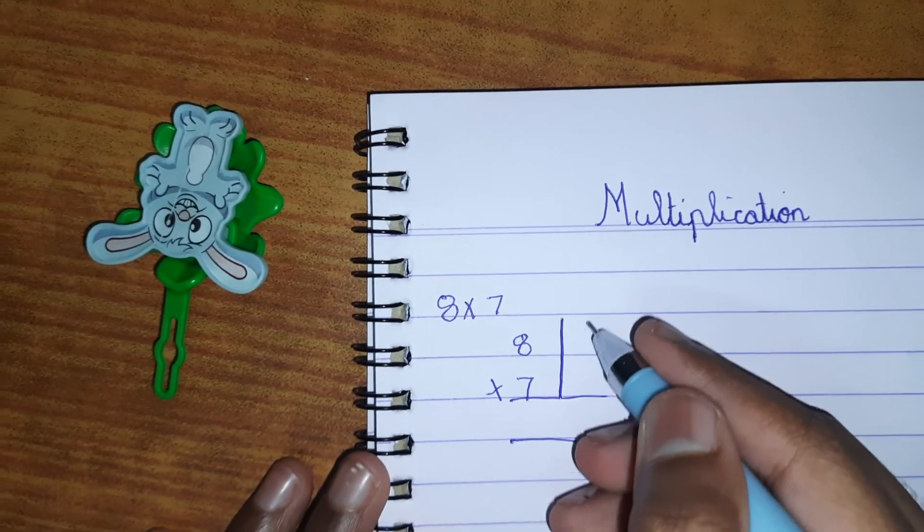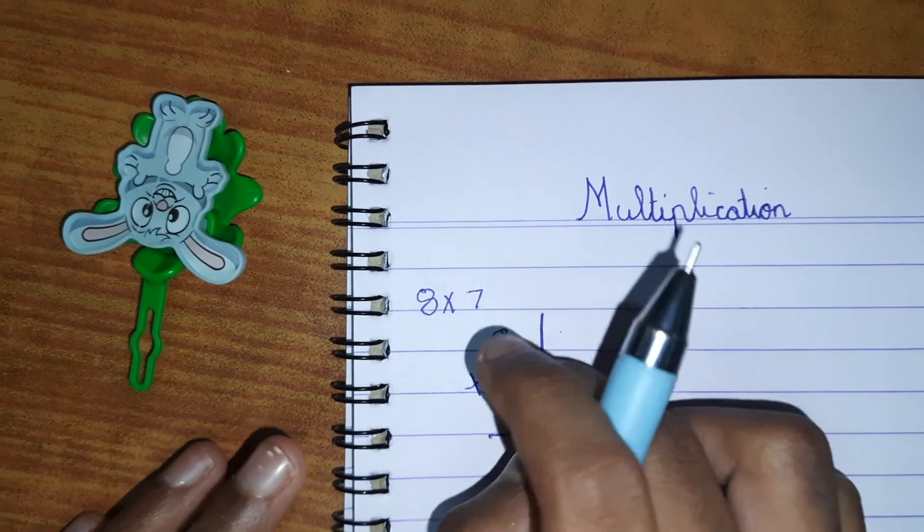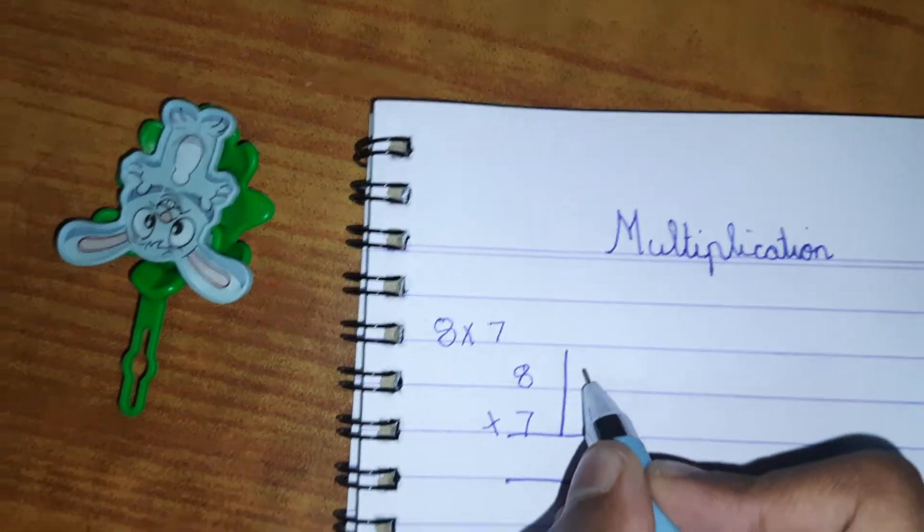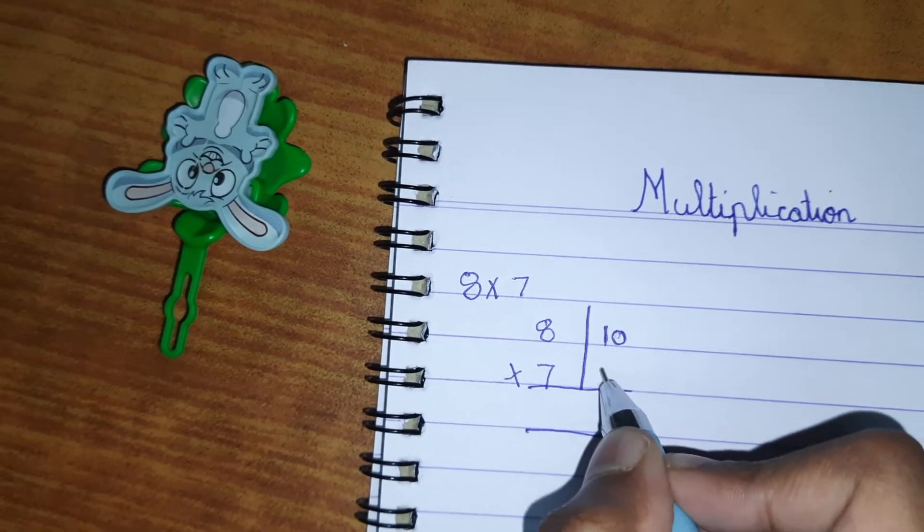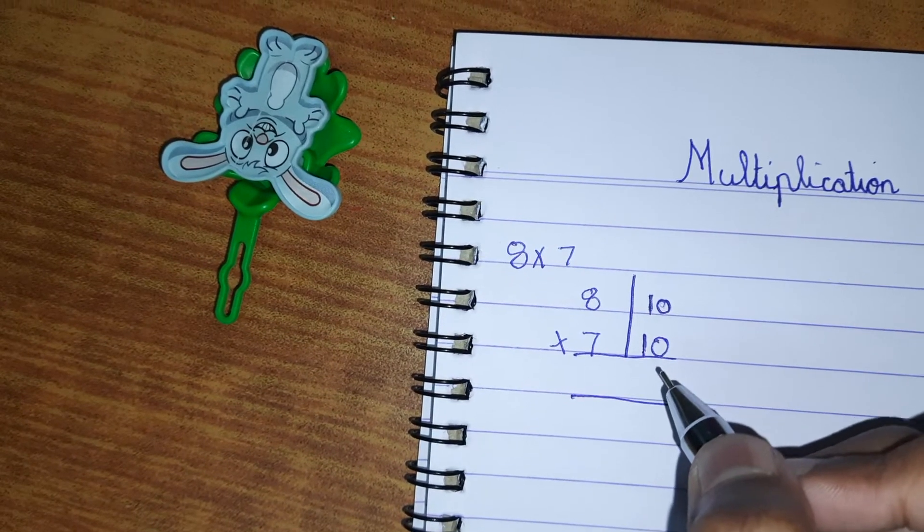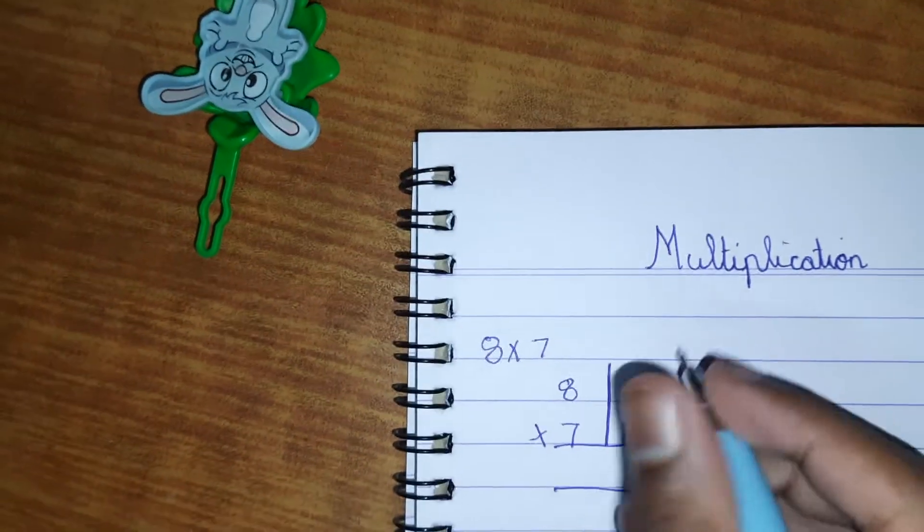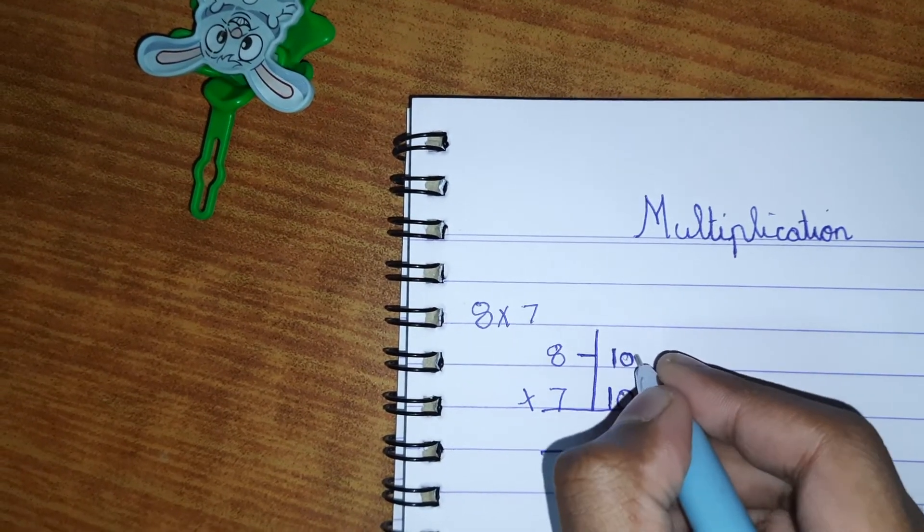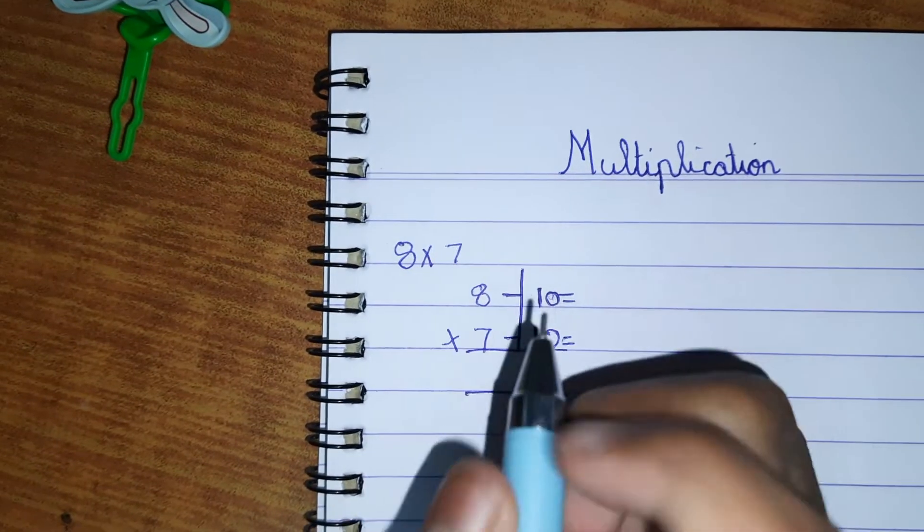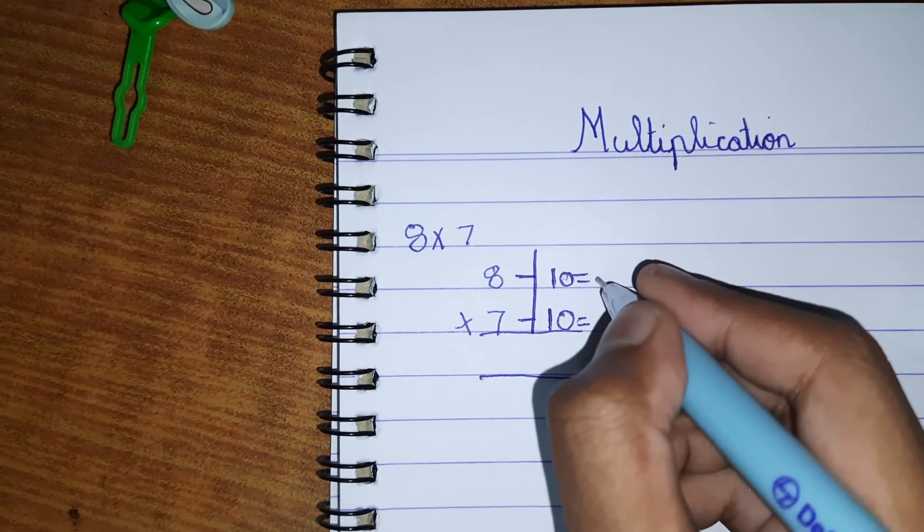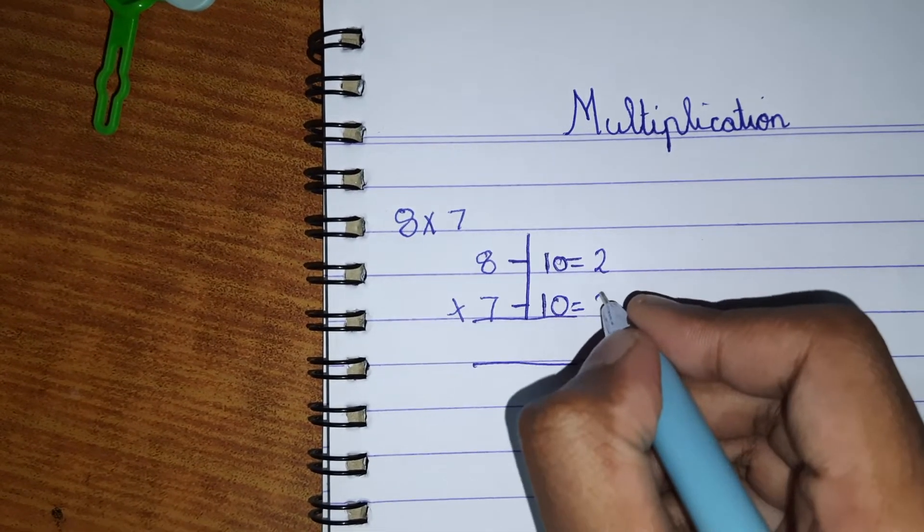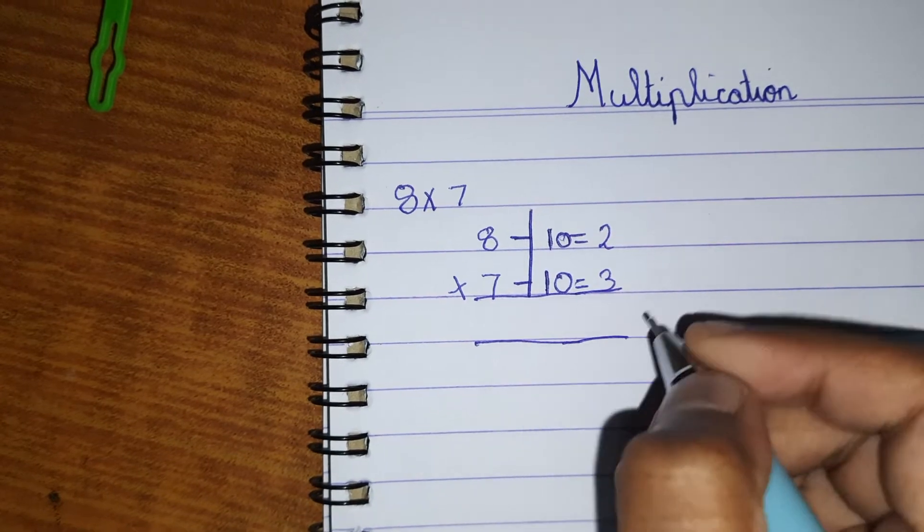And now you see the nearest number, which for me is 10. It's the nearest number for 7 also. So what you do is subtract this number by 10 and write the result over here. You don't need to write the tens and stuff, it's just to make it easier to understand. 8 minus 10 is of course 2. 7 minus 10 is 3.